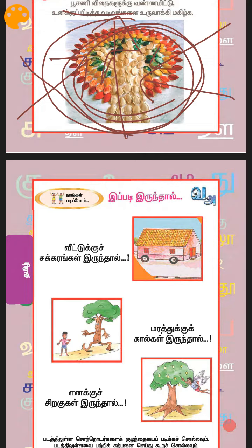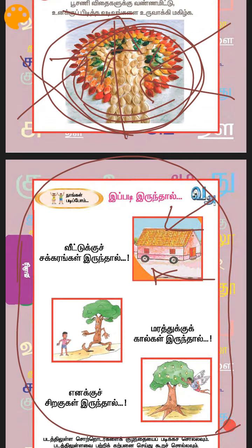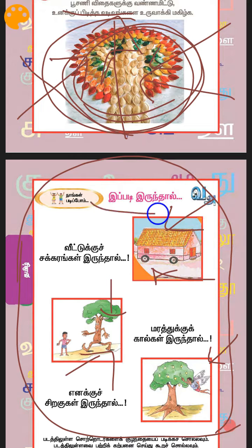Here you have a beautiful imaginary thing. Can you see what is funny here? You see wheels for the small home here. And you see some legs, two legs for the tree here. And you see some person, some small child with wings flying.